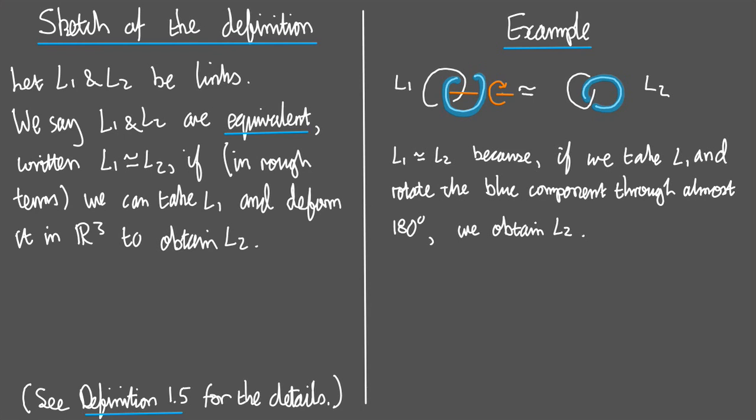Now, let me emphasize that when we say links, well, links include knots, right? So L1 and L2 could just be knots. Any definition that applies to links applies to knots, precisely because a knot is nothing other than a link with one component.